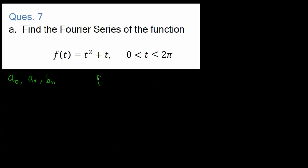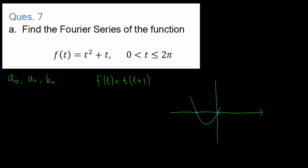Let's have a go at sketching this. I'll rewrite f of t as t times t plus 1. This is a parabola with intercepts at t equal to 0 and t equal to negative 1. So at 0 and at negative 1 we get this parabola. This is t squared plus t; however, we're asking for 0 to 2π, so we're going from 0 to 2π.